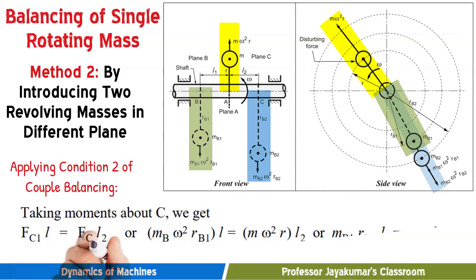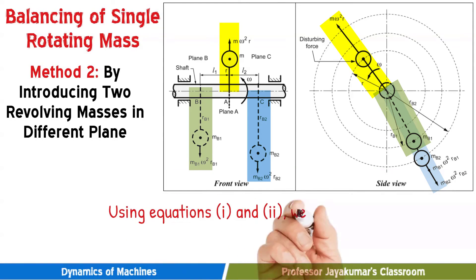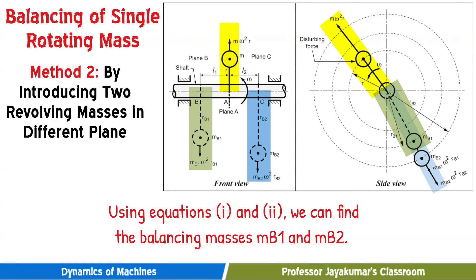Now let us apply condition number 2, which is nothing but balancing of couple. Let us take moment about any point, point a, b or c. Let us take a moment about c. We will be getting equation number 2. So using equation number 1 and 2, we can very well determine the required values of balancing masses mb1 and mb2. That is it. This is how balancing of single rotating mass is done.